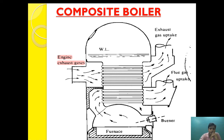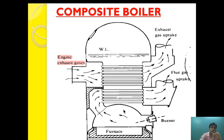When the exhaust gas is not in use — when the engine is standstill — the oil furnace fires and the flue gas flows through the smoke tube and goes out from the flue gas uptake. As the flue gas enters the smoke tube, the surrounding water heats up and ultimately produces steam for auxiliary purposes.